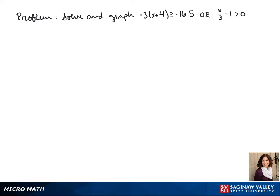Welcome to another day of algebra. Today we'll be solving and graphing the inequality -3(x+4) ≥ -16.5 or x/3 - 1 > 0.